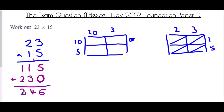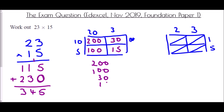In the grid method for 23 times 15: 10 times 20 is 200; 10 times 3 is 30; 5 times 20 is 100; and 5 times 3 is 15. Adding them all together — 200, 100, 30, and 15 — gives 345.